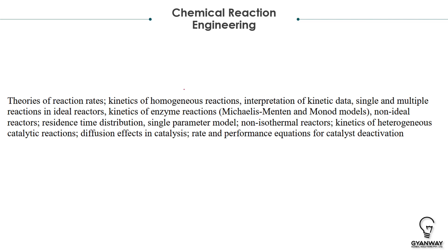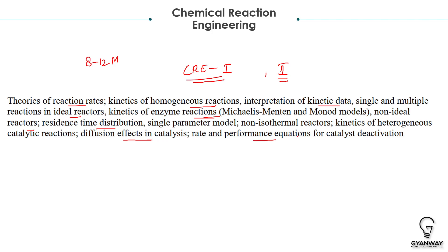Chemical Reaction Engineering is divided into CRE1 and CRE2 and has a weightage of 8 to 12 marks. Major questions come from CRE1 and some conceptual questions from CRE2. Topics include theory of reaction rates, homogeneous reaction kinetics, single and multiple reactions, series and parallel reactions, enzyme reactions — a recent addition — non-ideal reactors, residence time distribution (RTD), diffusion effects and catalysis, rate expressions, performance equations, and catalyst deactivation.